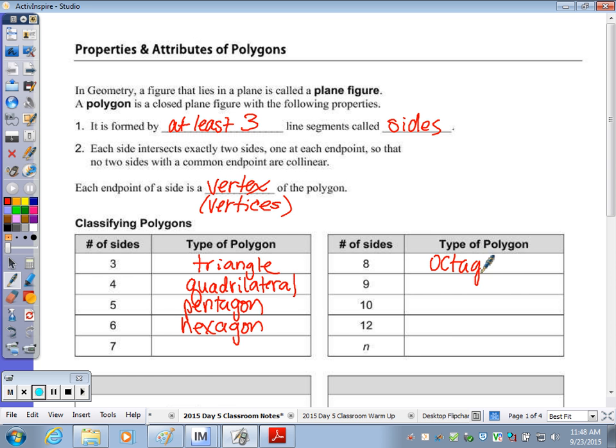We talked about eight being the octagon. Seven is the heptagon, H-E-P-T-A-G-O-N. Nine is a nonagon.